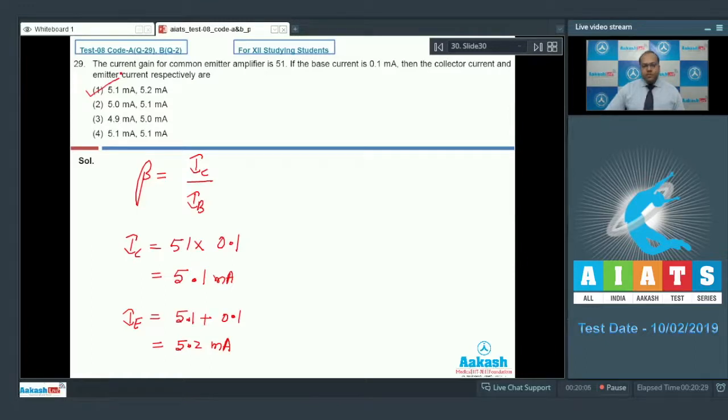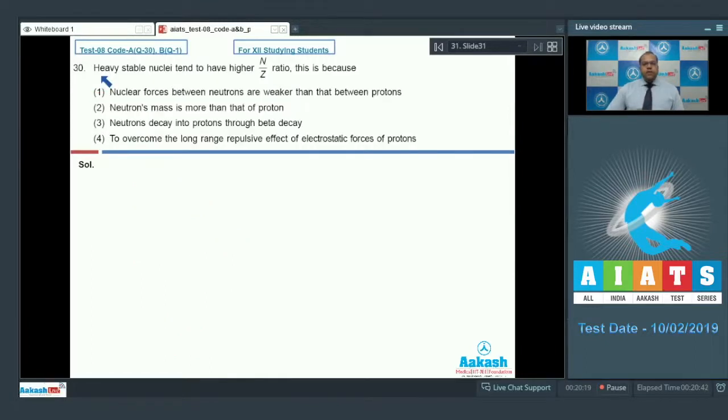Let's move to question number 30. In question number 30, heavy stable nuclei tend to have higher N by Z ratio. This is because nuclear forces between neutrons are weaker than between protons. This is wrong. Nuclear force between any two nucleons are same.